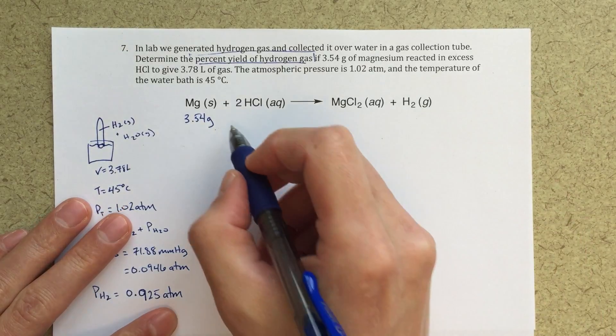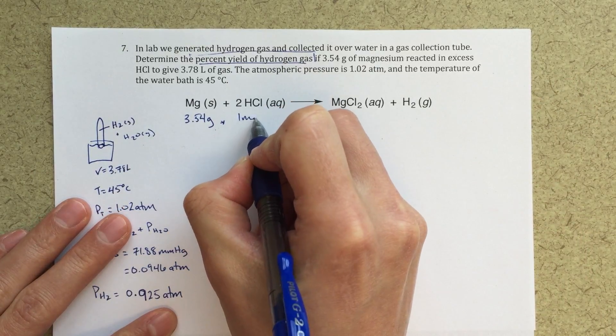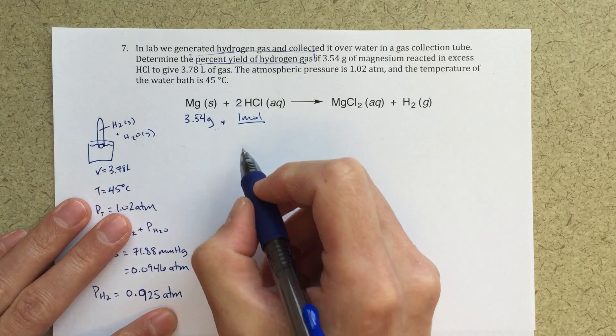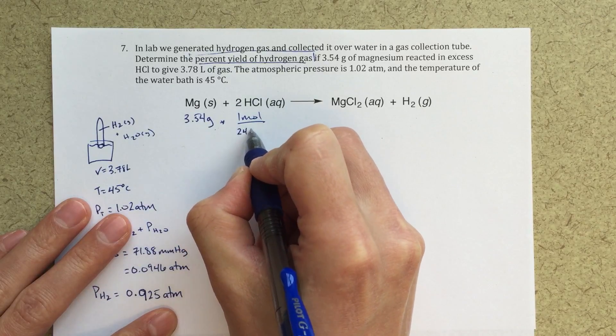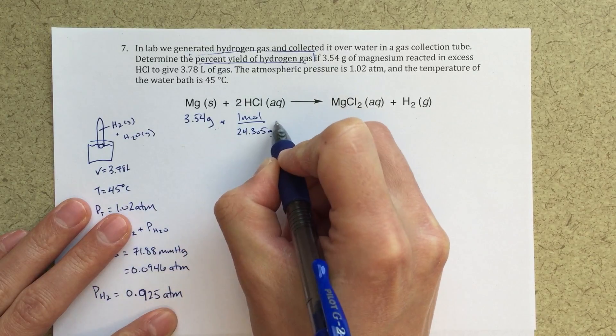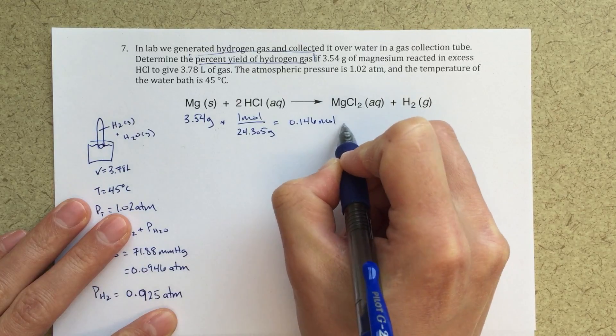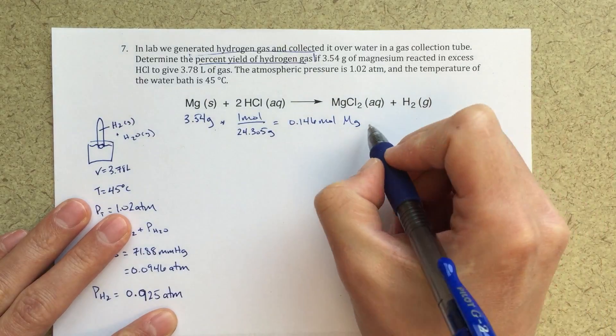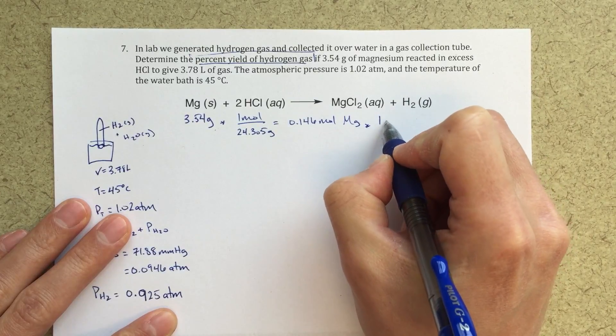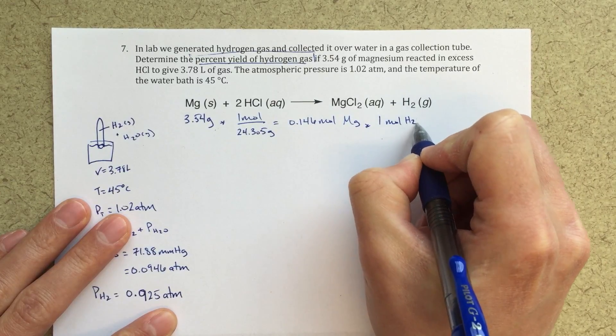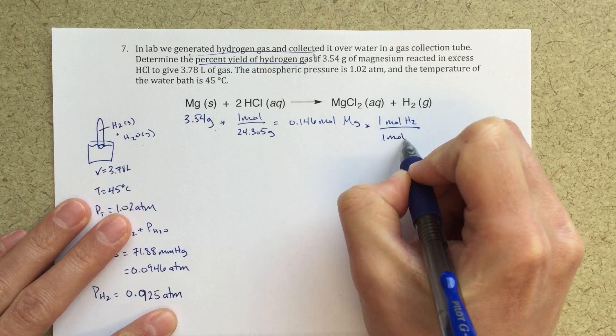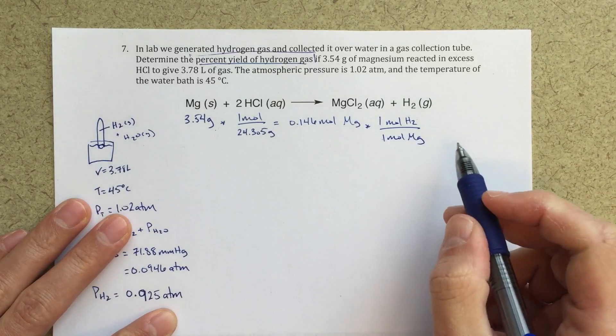And percent yield is going to be the actual yield over the theoretical yield. So to find that theoretical yield, I'm going to convert this 3.54 grams into moles of magnesium. And then I'm going to convert my moles of magnesium into moles of hydrogen.